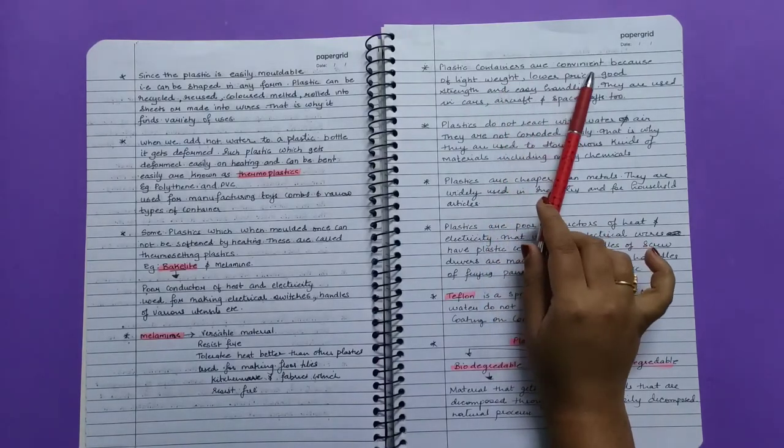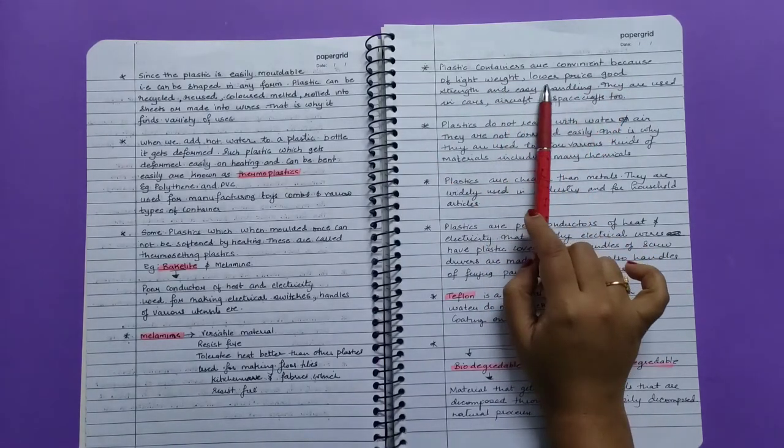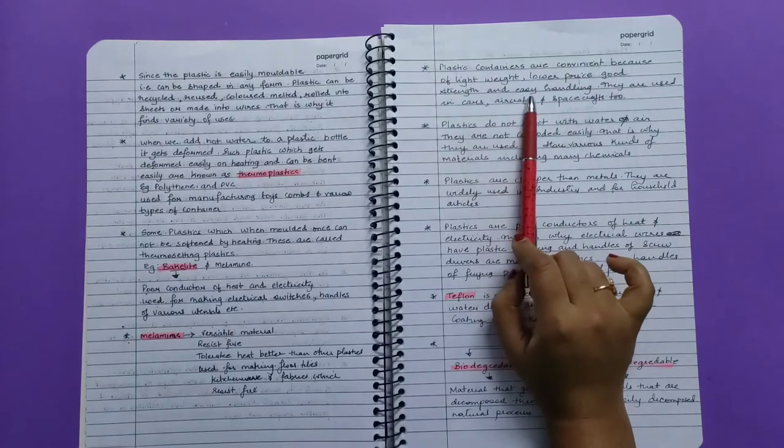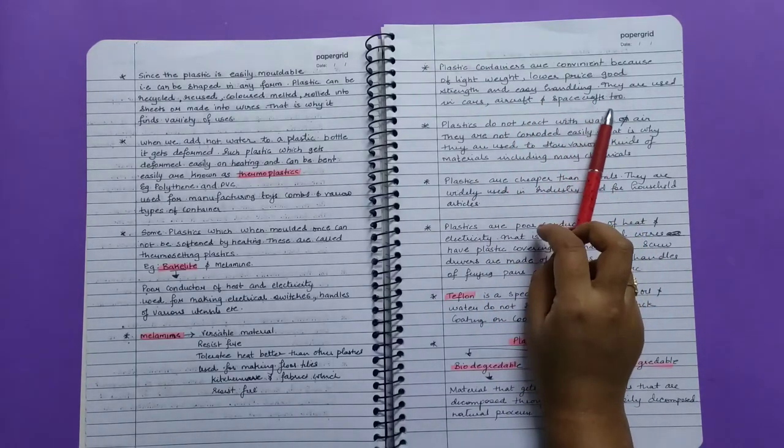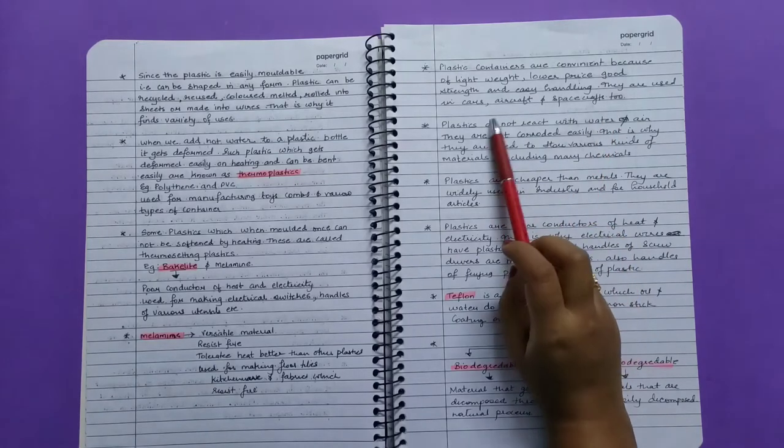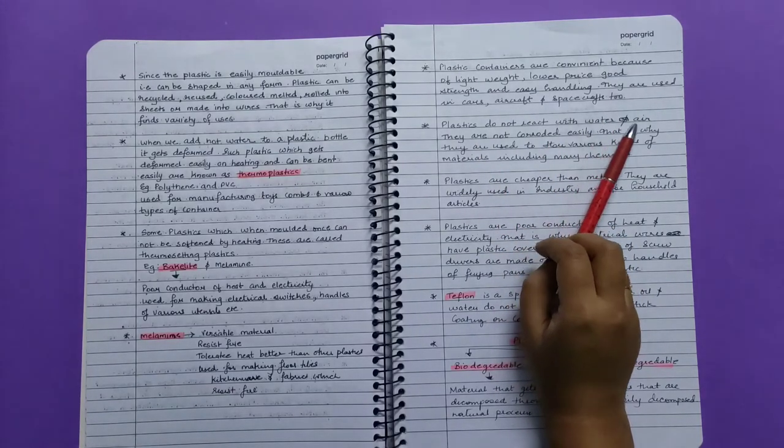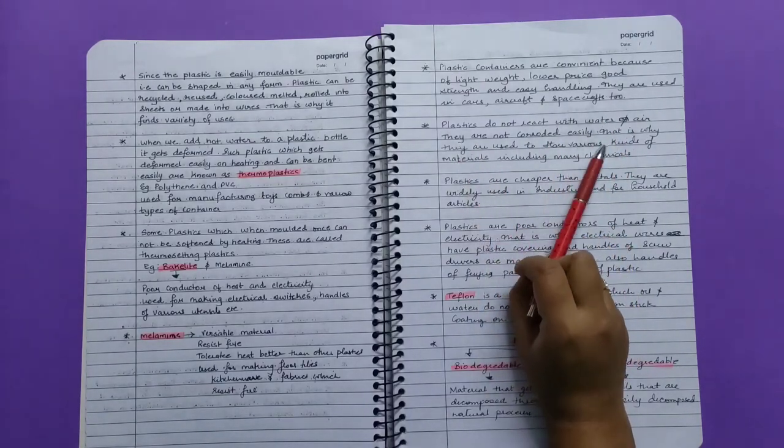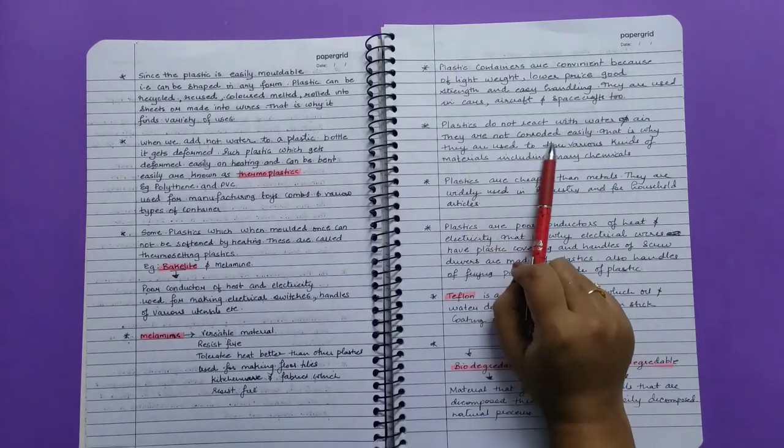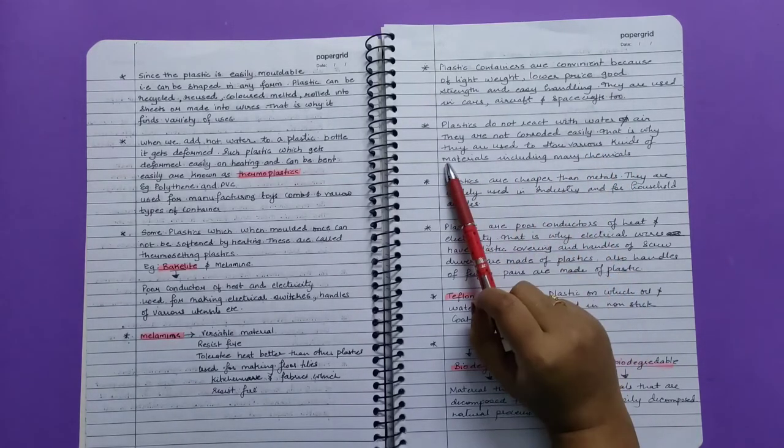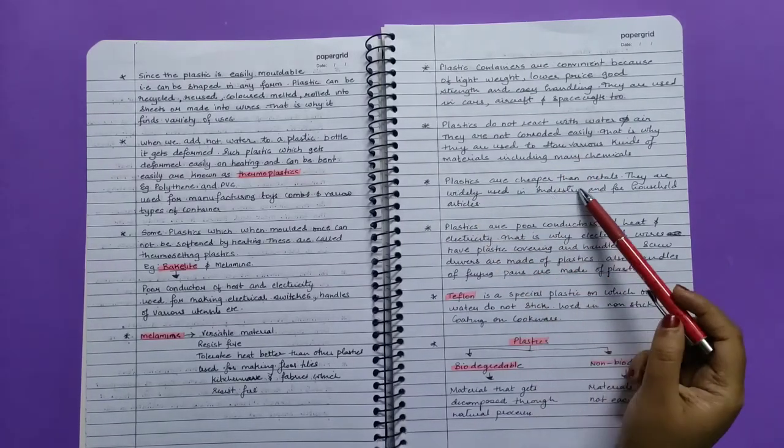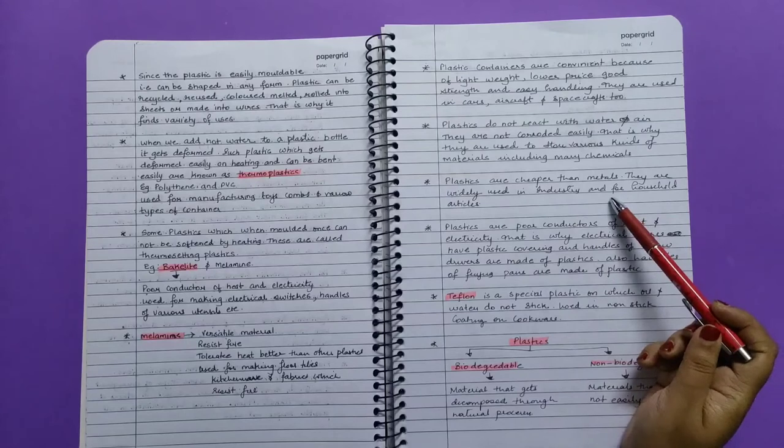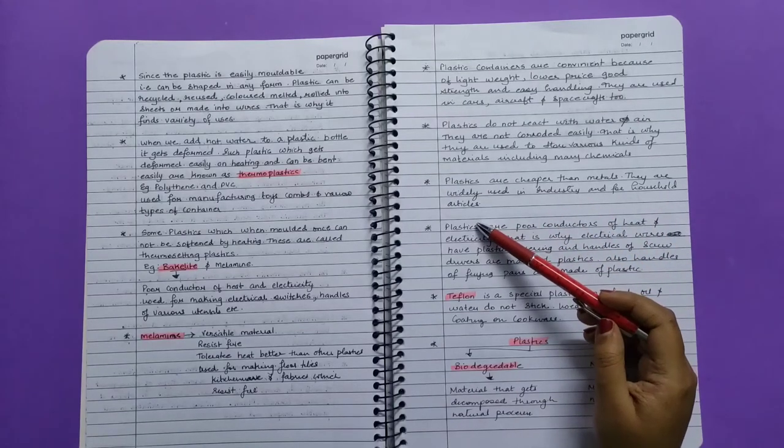Plastic containers are convenient because of their lightweight, lower price, good strength, and easy handling. They are used in cars, aircraft, and spacecraft too. Plastics do not react with water and air. They are not corroded easily, that is why they are used to store various kinds of materials including many chemicals. Plastics are cheaper than metal. They are widely used in industry and for household articles.